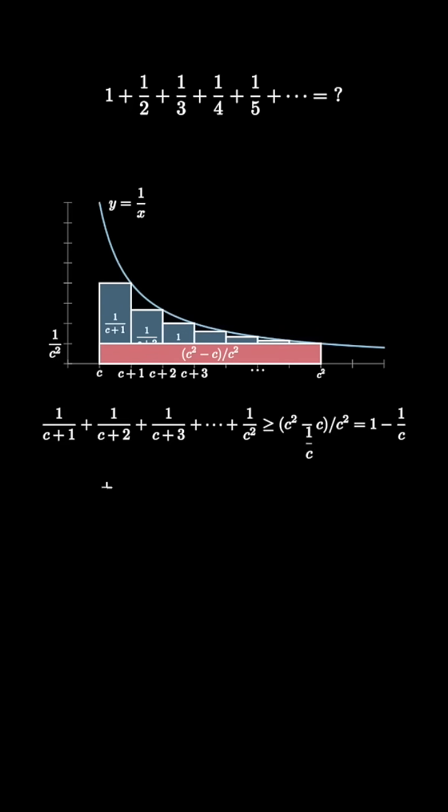We can use this fact to see that the sum from 1 over c plus 1 up to 1 over c squared is greater than or equal to 1. Applying this result repeatedly to the harmonic series shows us 1 over 1 is greater than or equal to 1.